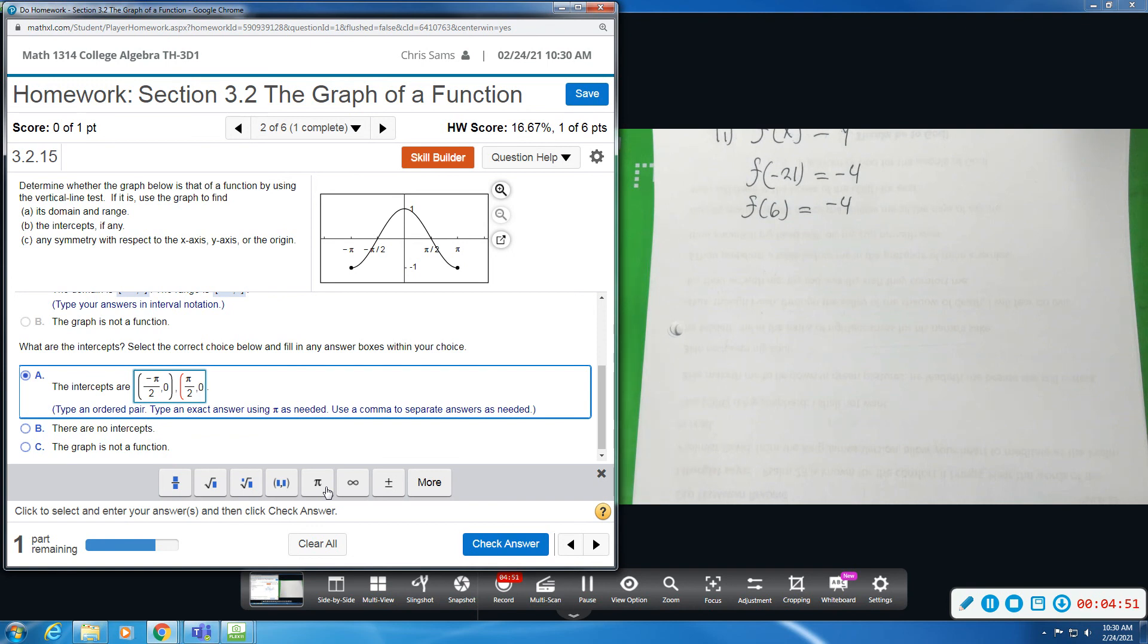And then close. So these are our two x-intercepts. Now we have a y-intercept at 0, 1. So comma, and then 0, comma 1. So that would give us our y-intercept. So we've got our 3 labeled there.